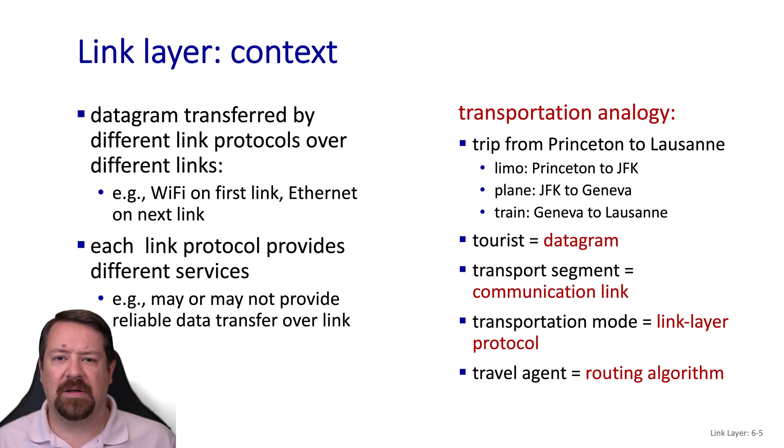For example, wireless links typically provide reliability, while wired link protocols typically do not. If we want to think of this in terms of another transportation analogy, we can envision a human tourist embarking on a trip while they take multiple modes of transportation, including a car service to get to the airport, commercial air travel from one country to another, and then a train to deliver them from the airport to their final destination. Each of these modes of transportation comes with its own protocols, and yet they're transporting the same tourist and baggage along the way.